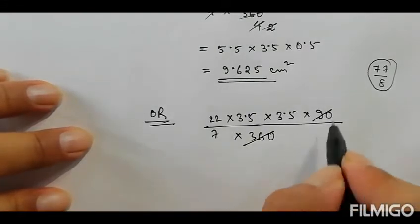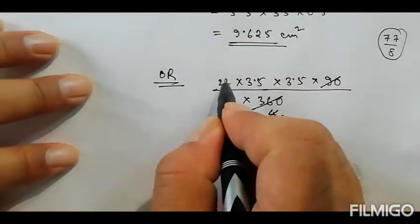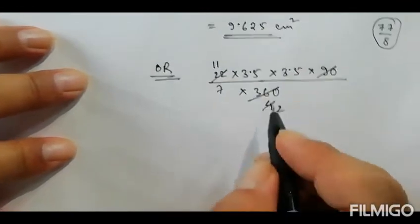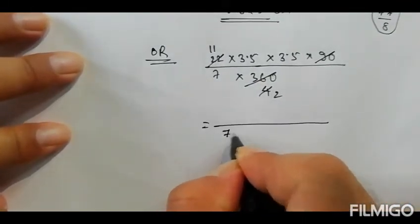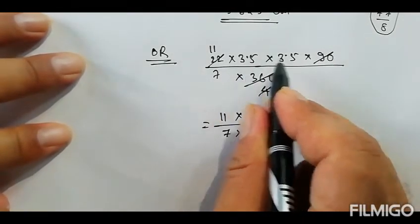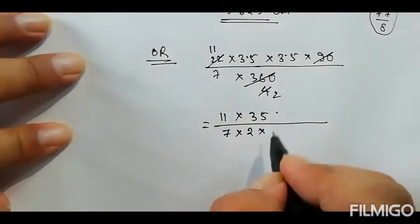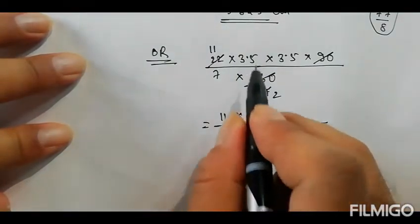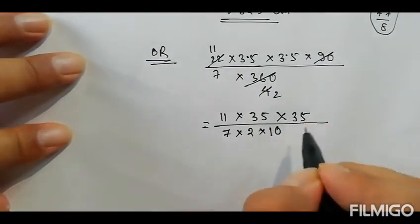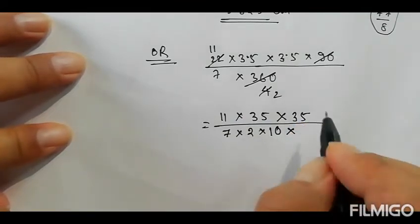So we can simplify further. We have values 5 to 10, 5 to 7 to 35, and 7 to 2, giving us 2. Then 11 and 3.5 and 3.5, taking 2 out gives 35. So we get 3.5, confirming our calculation.